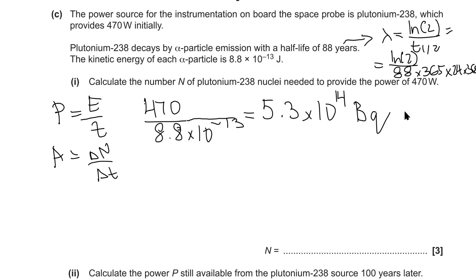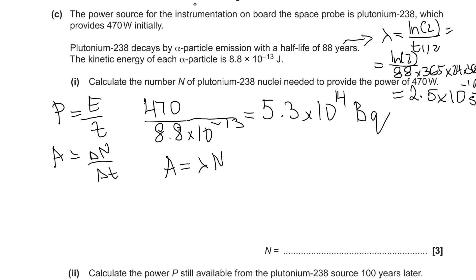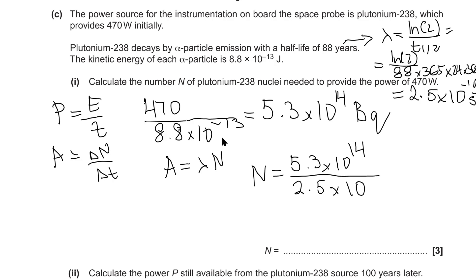We have our activity, and activity is linked to the decay constant via A = λN, where N is what we're looking for. Putting the decay constant into the calculator gives around 2.5×10⁻¹⁰ s⁻¹. Rearranging for N: N = 5.3×10¹⁴ ÷ 2.5×10⁻¹⁰, giving 2.1×10²⁴ particles — a large number, as expected.